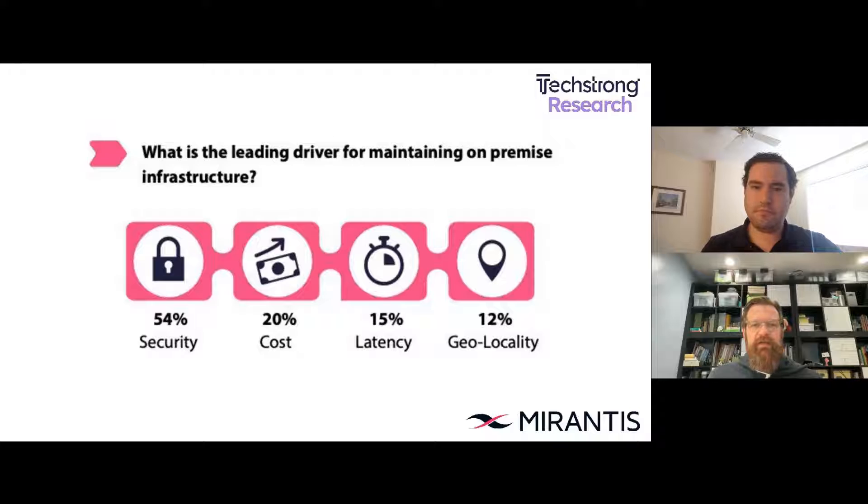Cost is increasingly trending as a driver back to on-premises. Customers with large HPC-type clusters — 10,000-node clusters — tried to move them to the cloud and realized that the sheer volume of data movement plus compute needed made cloud too expensive. Technologies like OpenStack are maturing and making the on-premises experience more cloud-like, reducing the effort and cost of managing on-prem infrastructure significantly compared to five years ago.